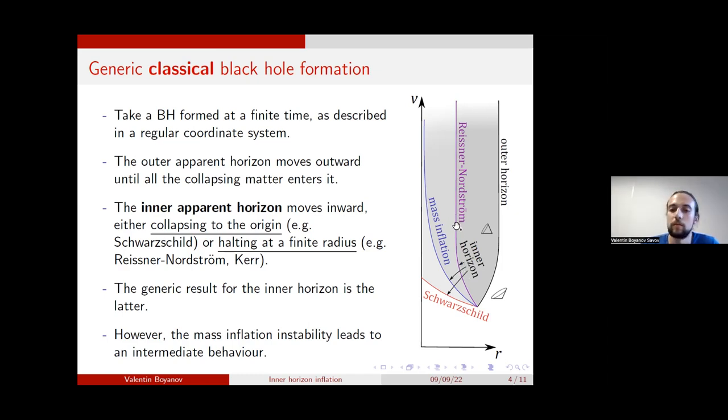Although a long-lived inner horizon actually turns out to be unstable, classically. So under generic perturbations, the net evolution of the inner horizon actually looks something in between these two behaviors. Where it moves toward the origin, but doesn't plunge toward it in the same way it does in the case of the formation of a Schwarzschild black hole. And this instability of long-lived inner horizons is known as mass inflation. And I'll refer to it a few more times during the talk.